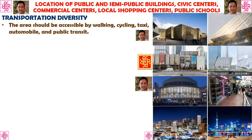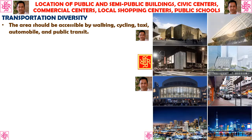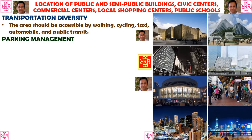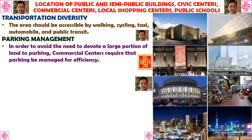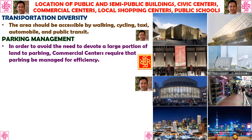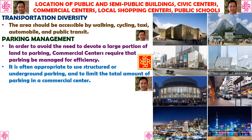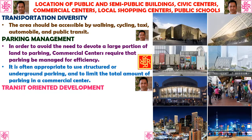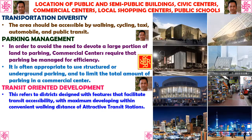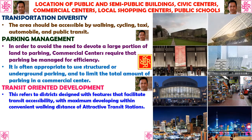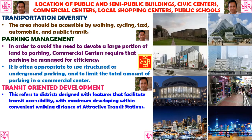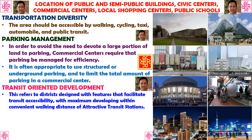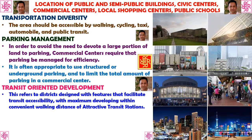There should be transportation diversity — the commercial center should be accessible while walking, cycling, taxi, automobile, and public transit whether bus or mass transit. Parking management is also required within commercial centers to avoid devoting a large portion of land to parking; it is often appropriate to use structured or underground parking and to limit the total amount of parking. There should also be transit-oriented development, referring to district design that facilitates transit accessibility with maximum development within convenient walking distance of an attractive transit station — whether underground railway or bus. Empress Market has this status of transit-oriented development.